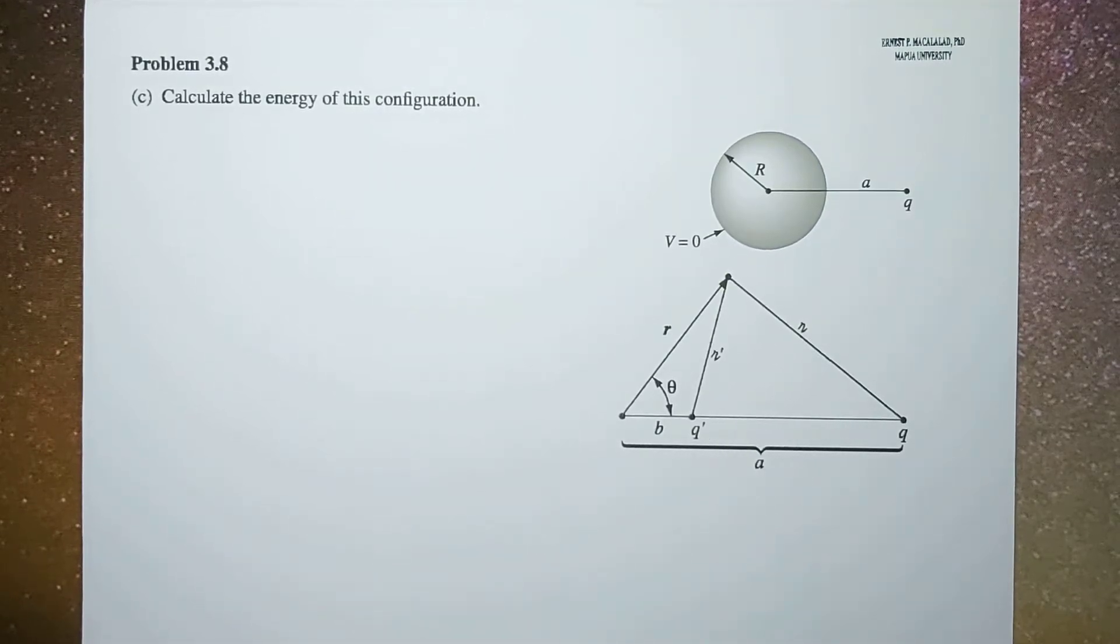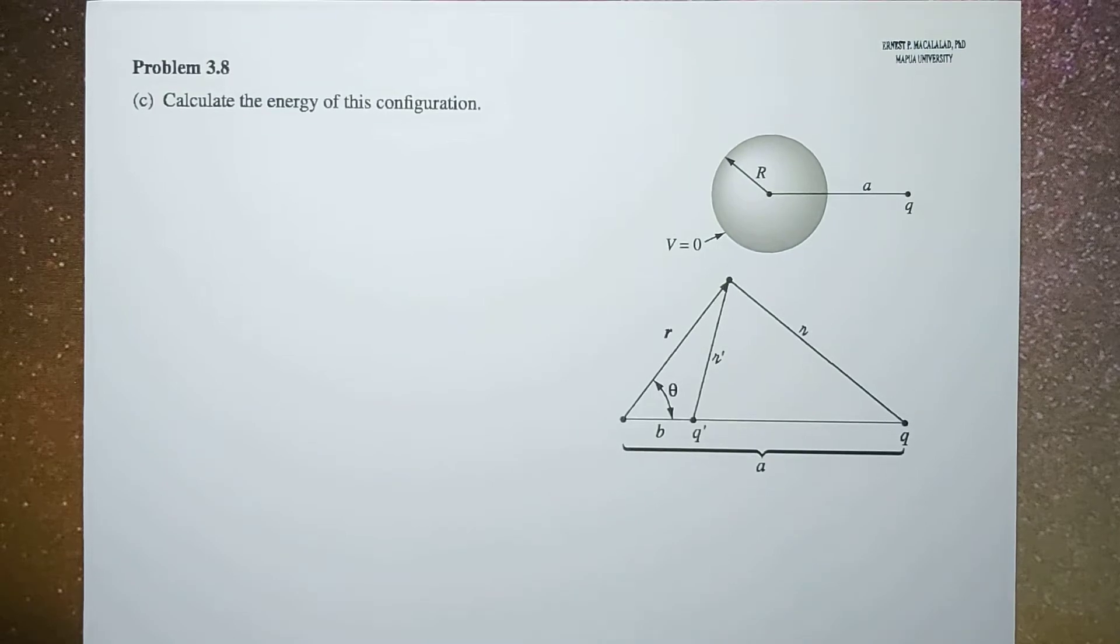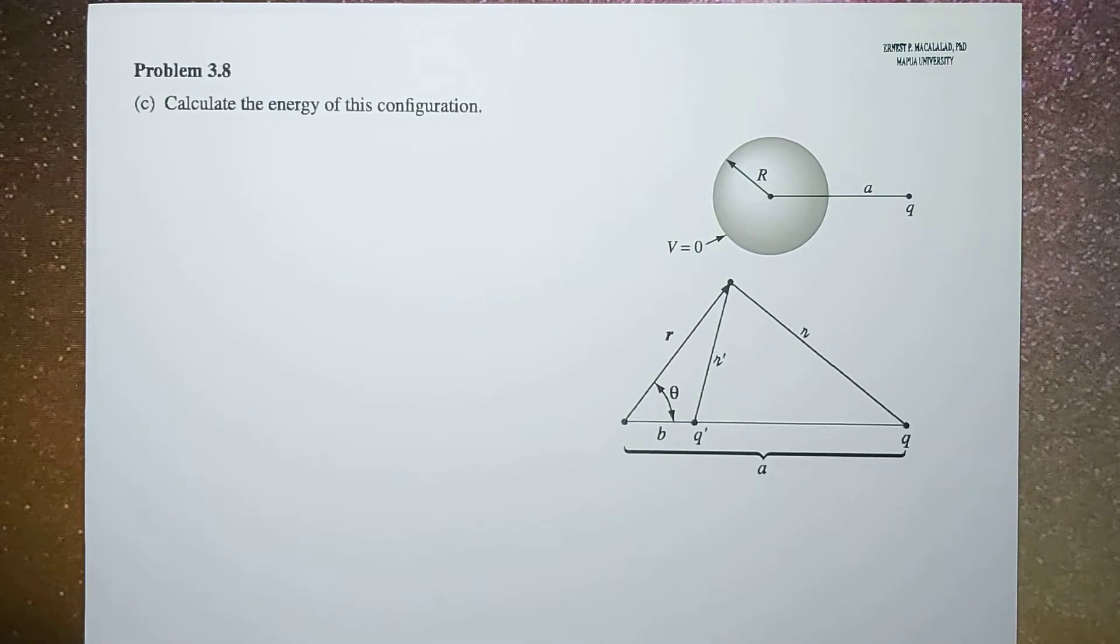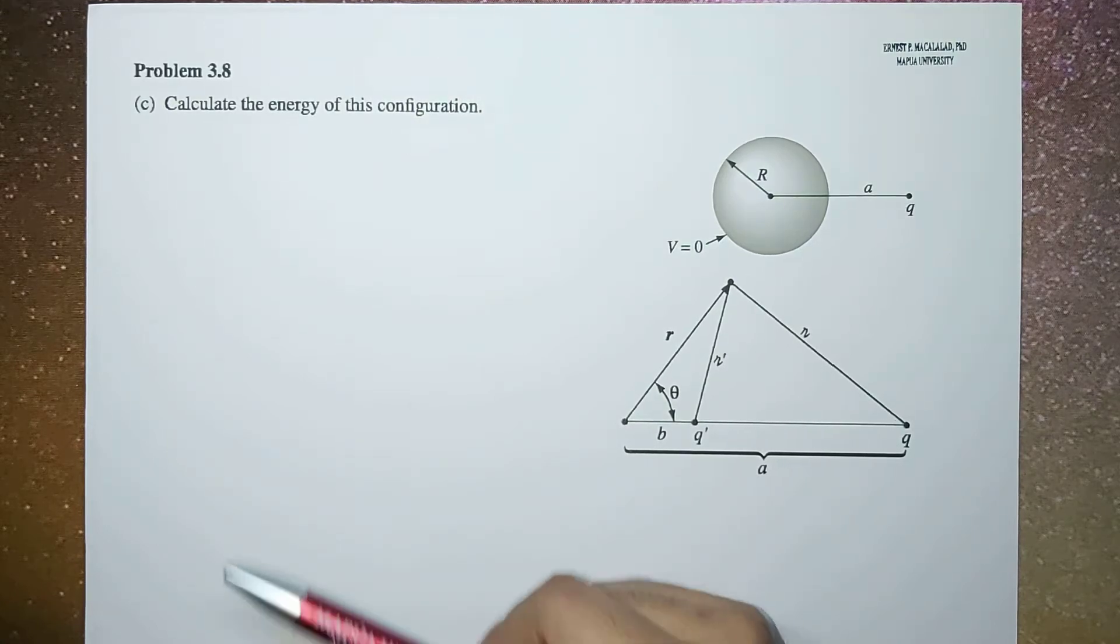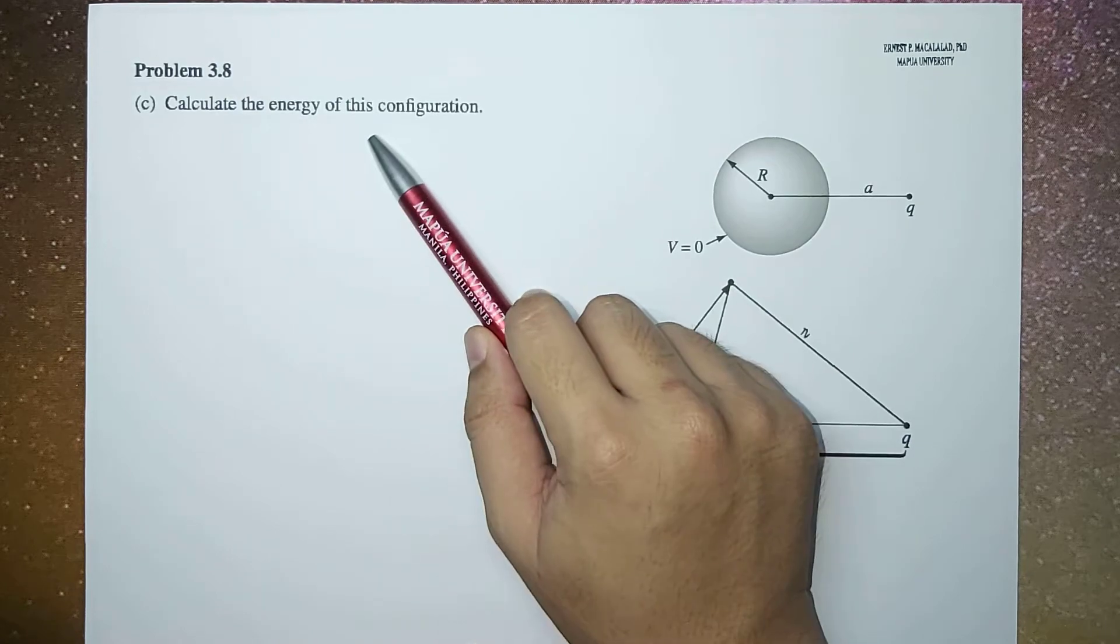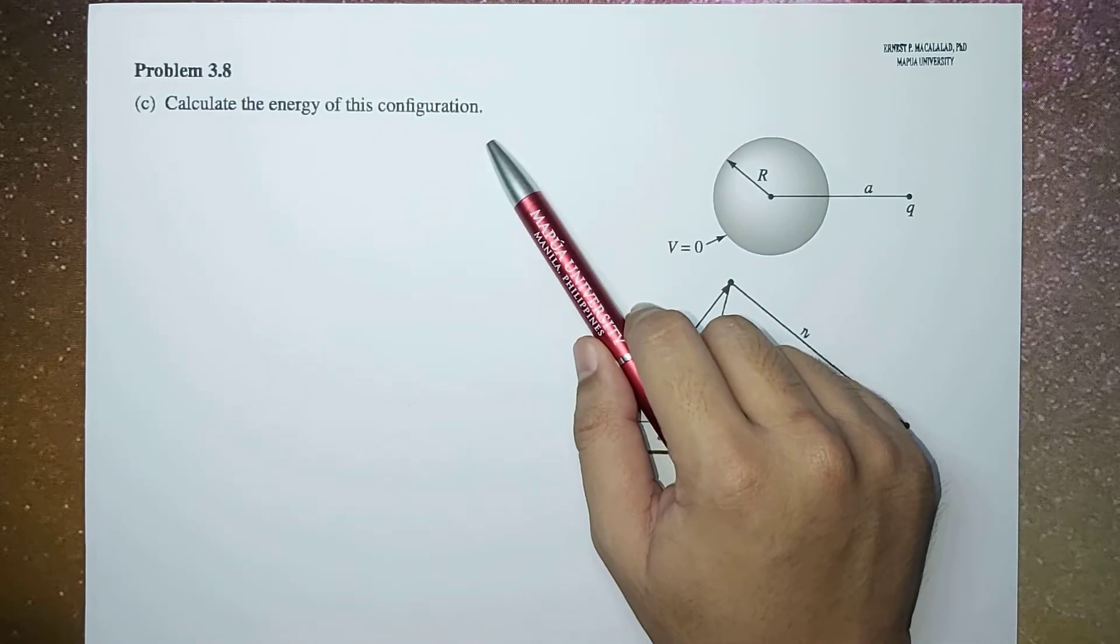What's up guys, it's me Sir Ernest. Today we're going to finish solving problem 3.8 of Griffith's fourth edition. This is the third part of this problem and we are asked to calculate the energy of this configuration.